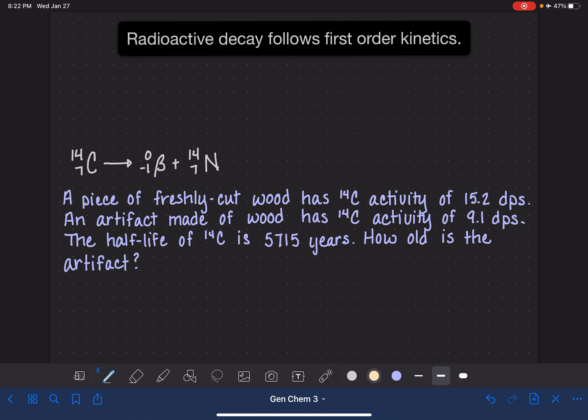So if we wanted to calculate the half-life of a radioactive decay reaction, we would use the half-life equation for first-order kinetics, 0.693 divided by the rate constant. We can use this equation to calculate half-life as long as we know the rate constant. If we don't know the rate constant, we can use this equation to calculate it if we know the half-life.